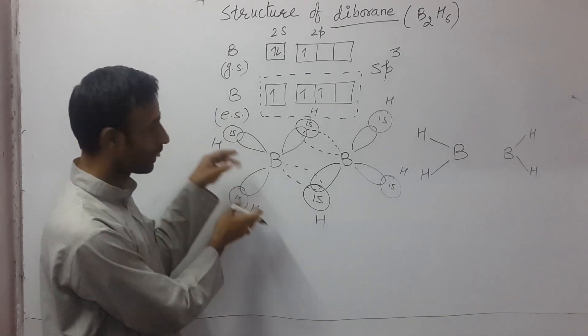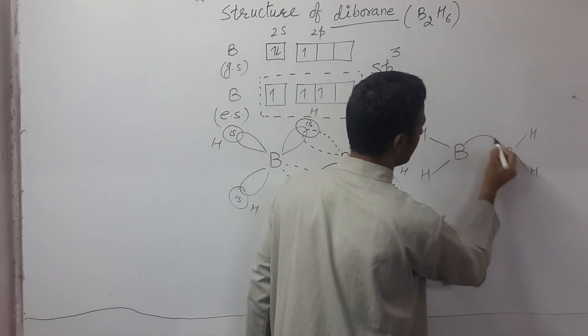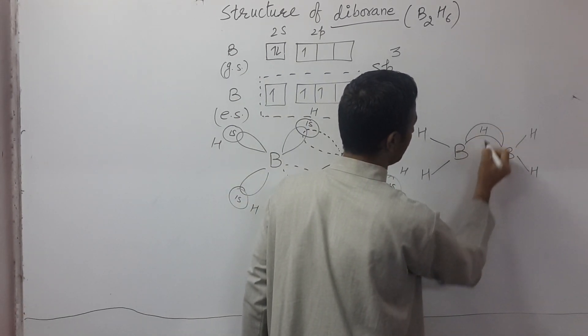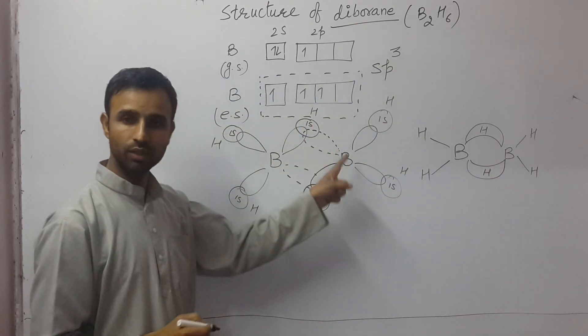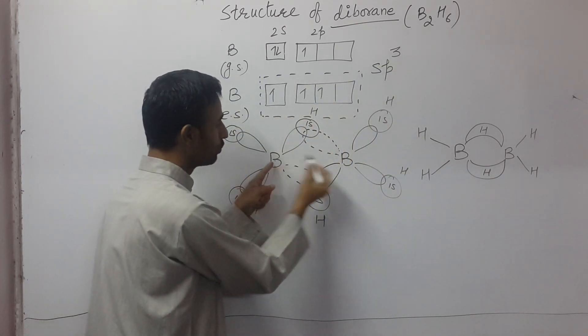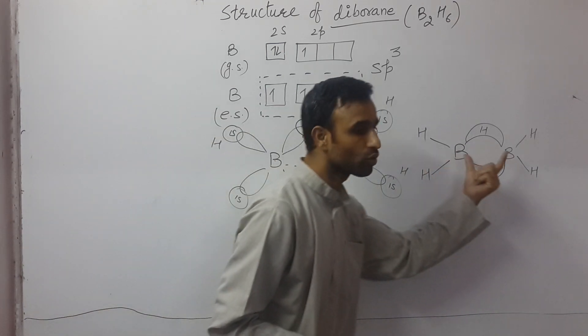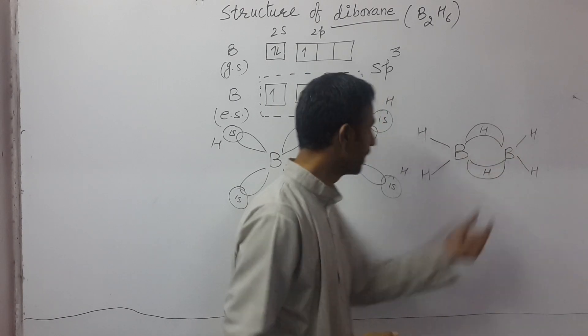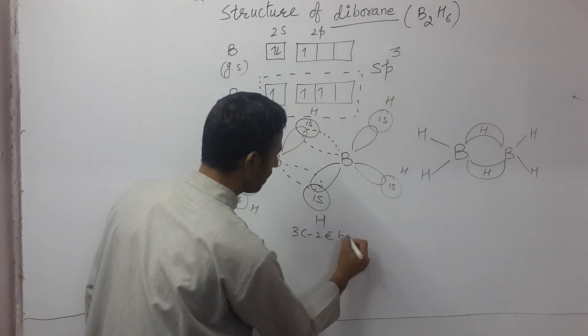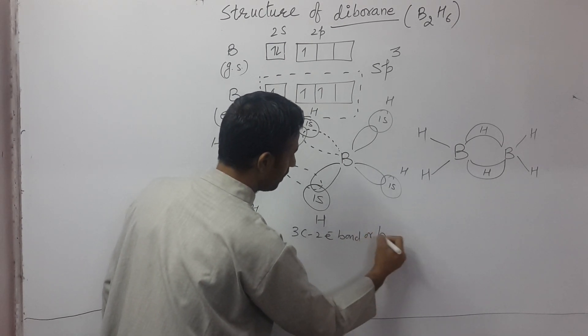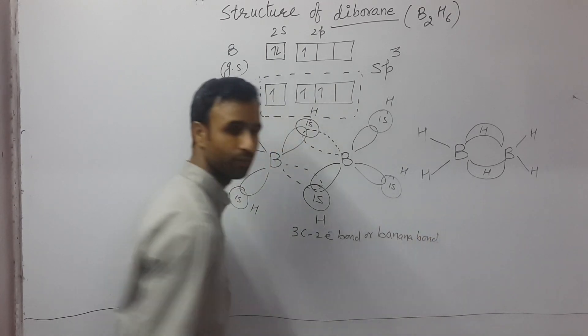BH2 in between, it is like this, this is the electron cloud. Two borons and hydrogen attached to each other. And this is also known as a banana bond. This is a three-center, two-electron bond or banana bond.